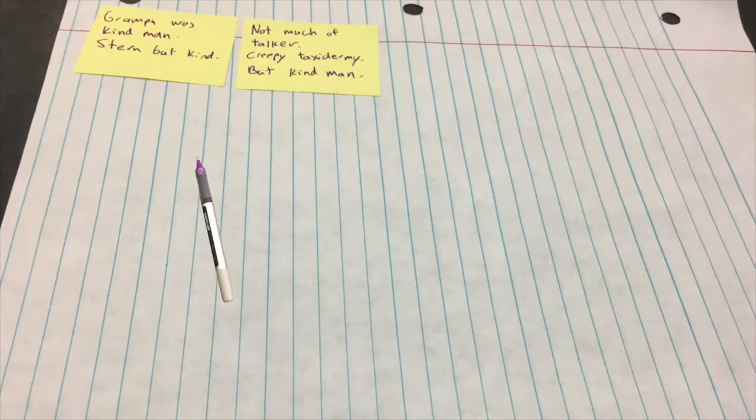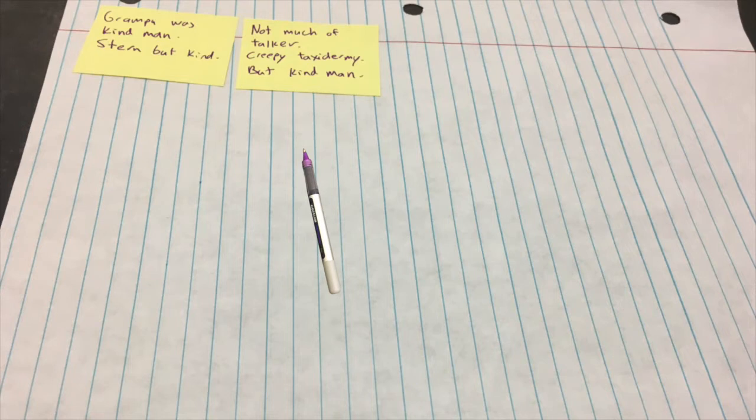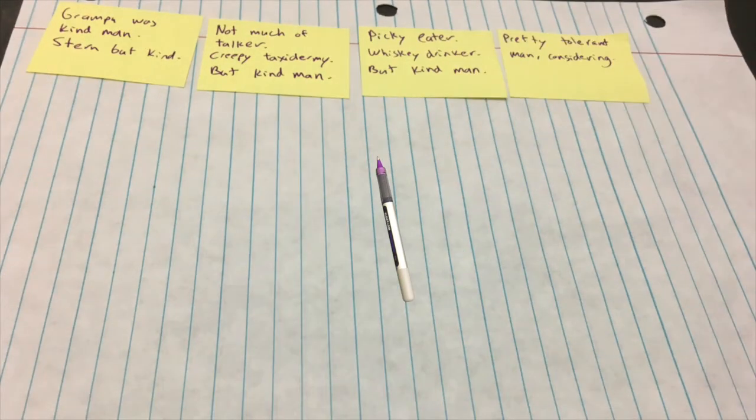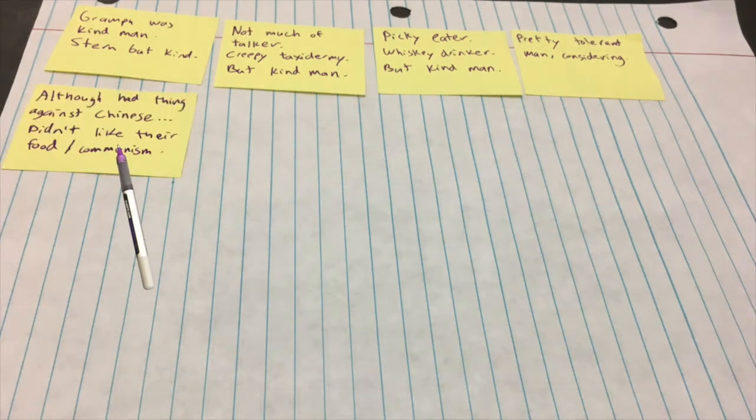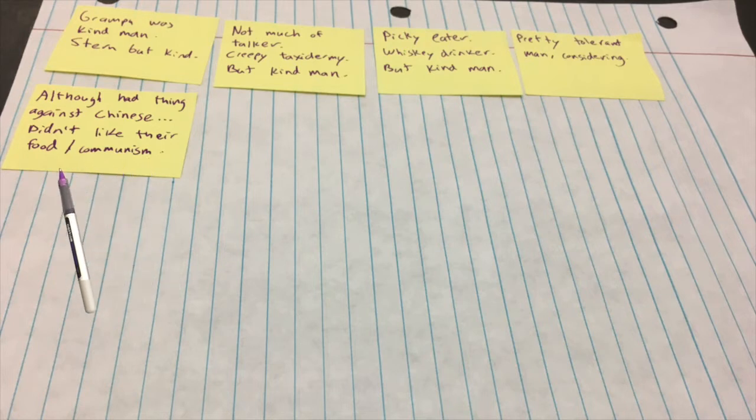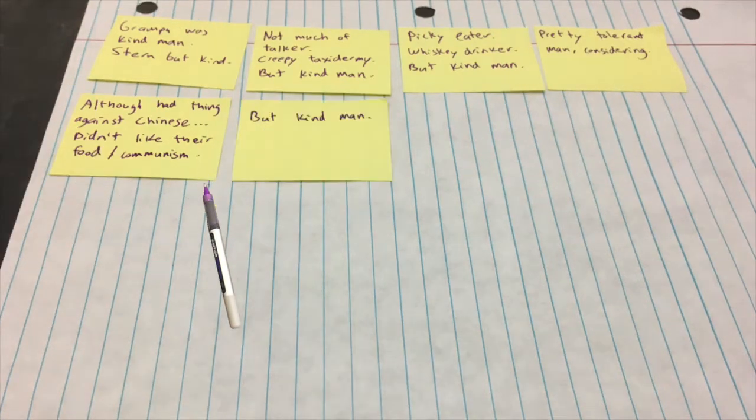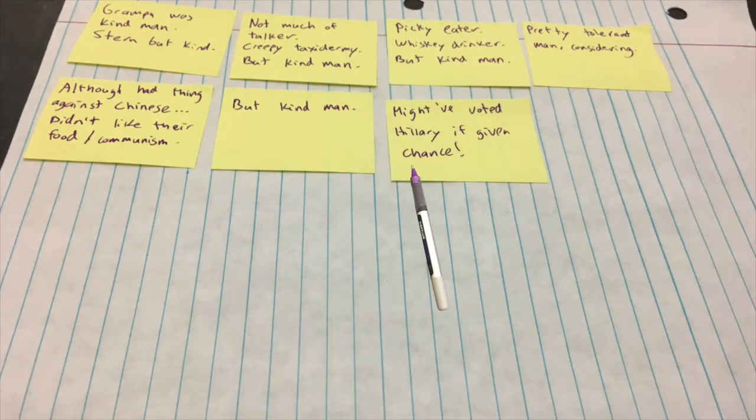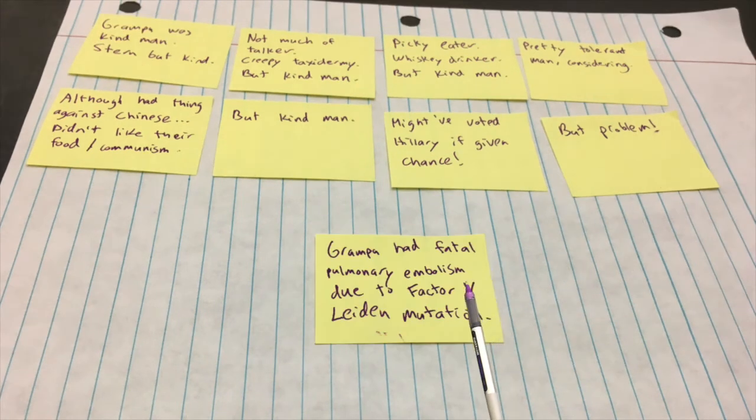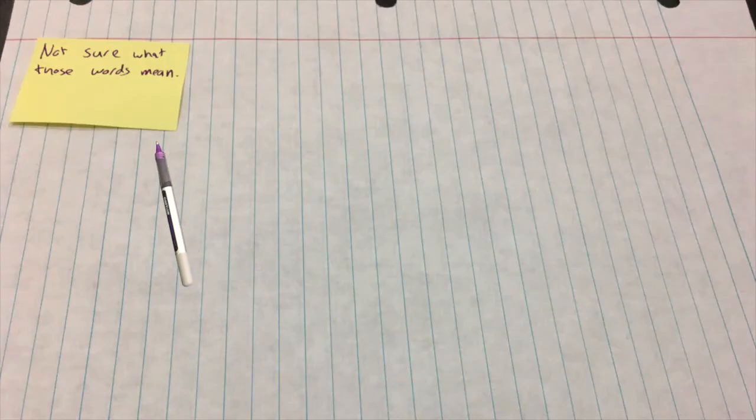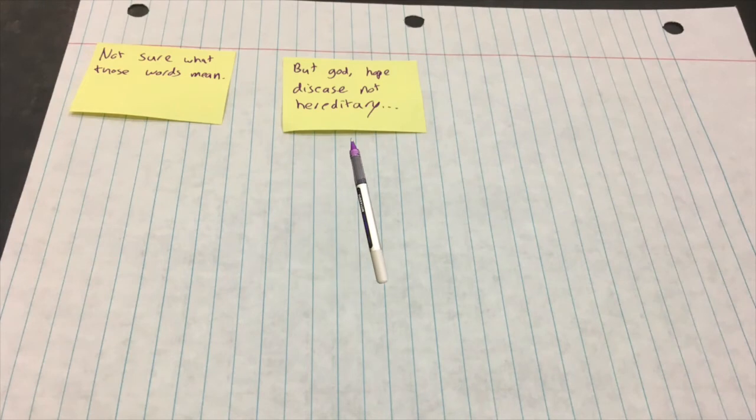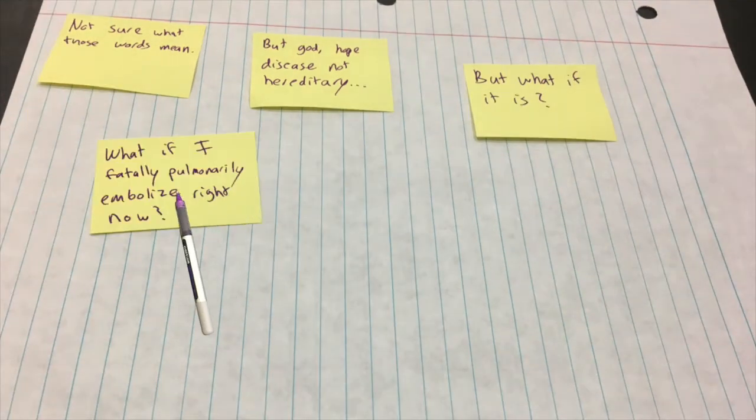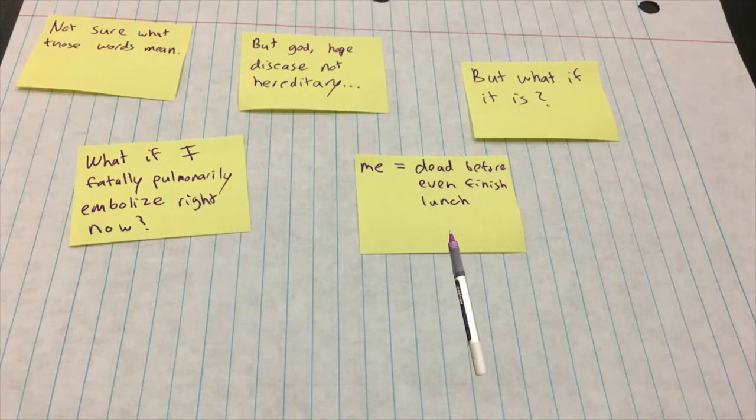Grandpa was a kind man. Stern but kind. Not much of talker. Creepy taxidermy but kind man. Picky eater. Whiskey drinker but kind man. Pretty tolerant man, considering. Although had thing against Chinese. Didn't like their food slash communism. Those are two very, like, those are polar opposites. But kind man. Might have voted Hillary if given chance. But problem. Grandpa had fatal pulmonary embolism due to factor 5-laden mutation. Not sure what those words mean. But god, I hope this case not hereditary. But what if it is? What if I fatally pulmonary embolize right now? Me equals dead before I even finish lunch. Oh god. I love this so much.